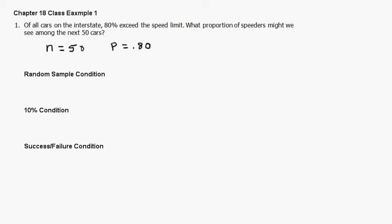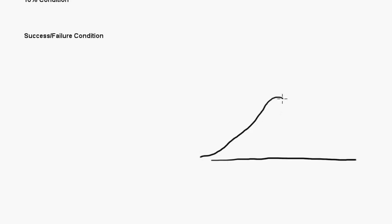What we'd like to do is use the normal model. So I'd like to draw a picture like this. I'm trying to draw it a little bit big so I can label it. Here's the center, and that's one standard deviation in both directions, two and three, two and three.